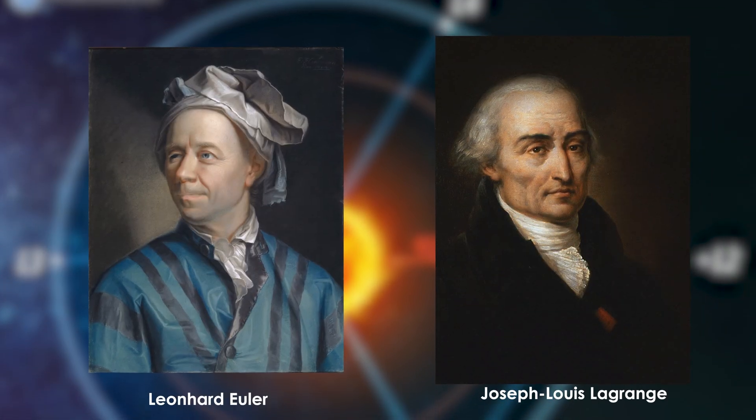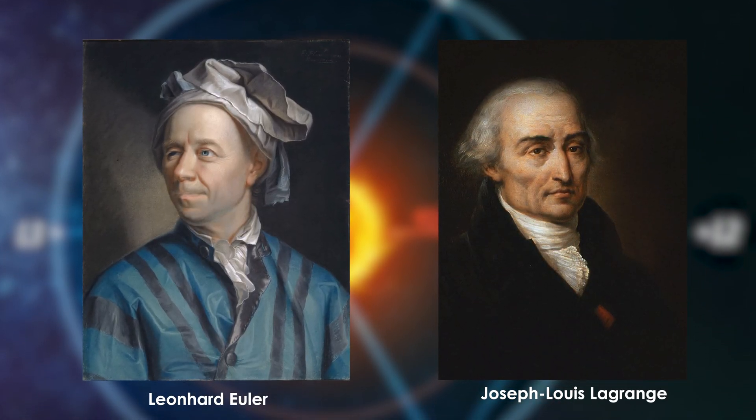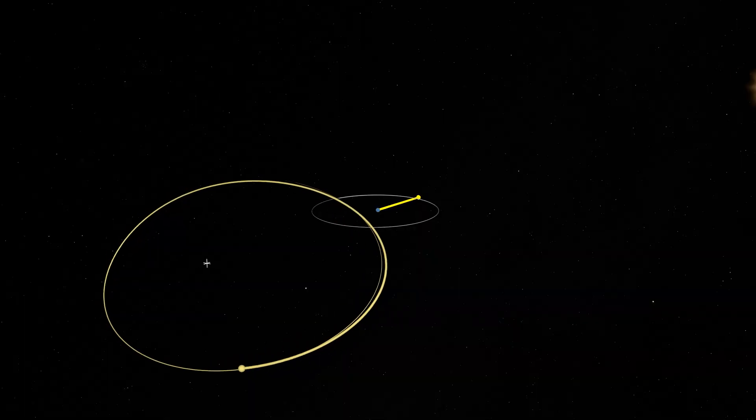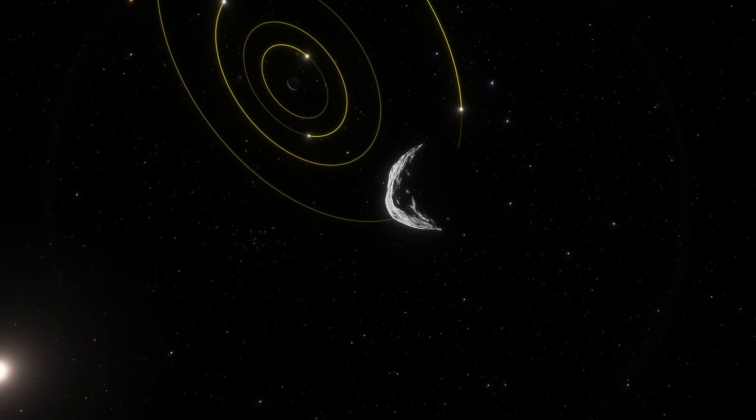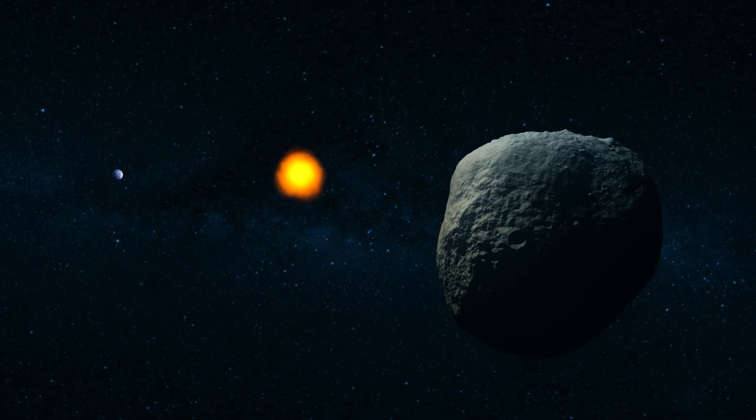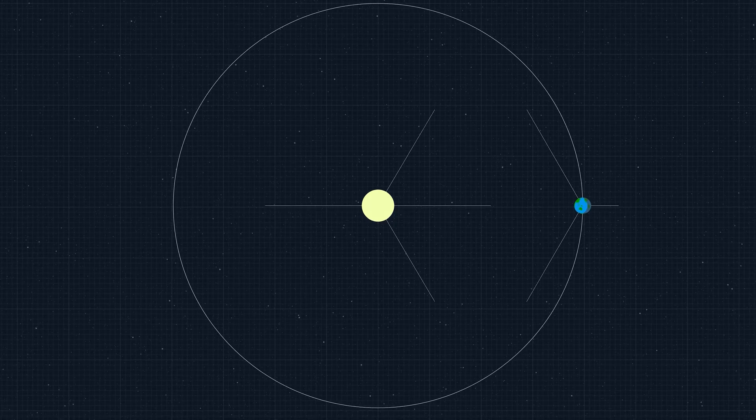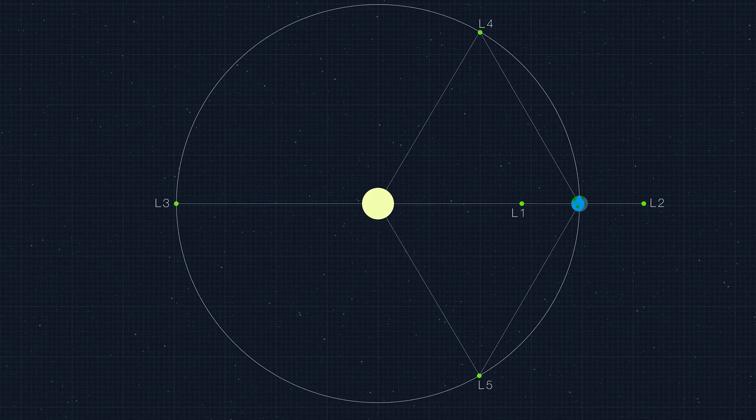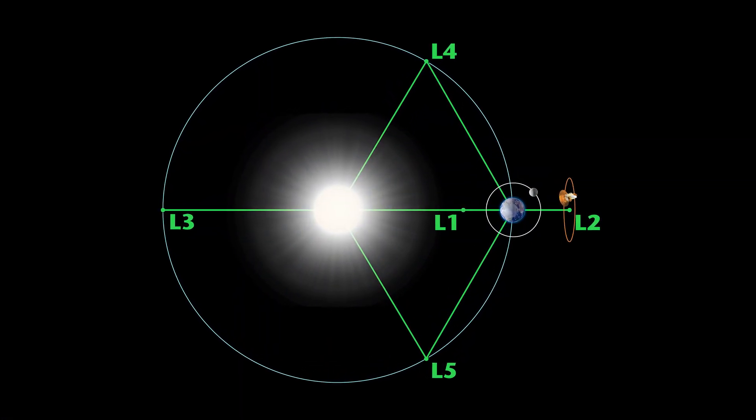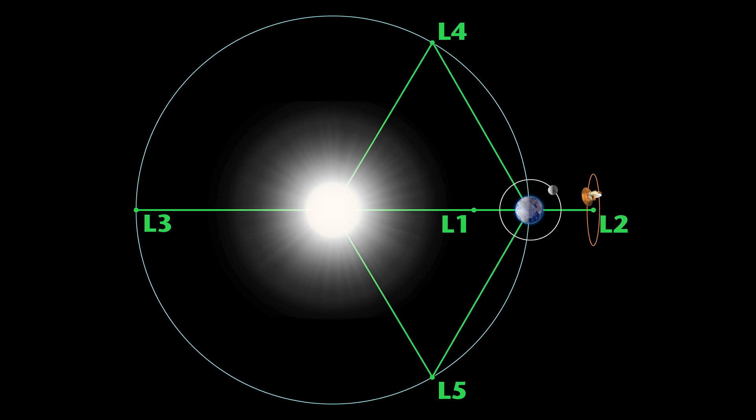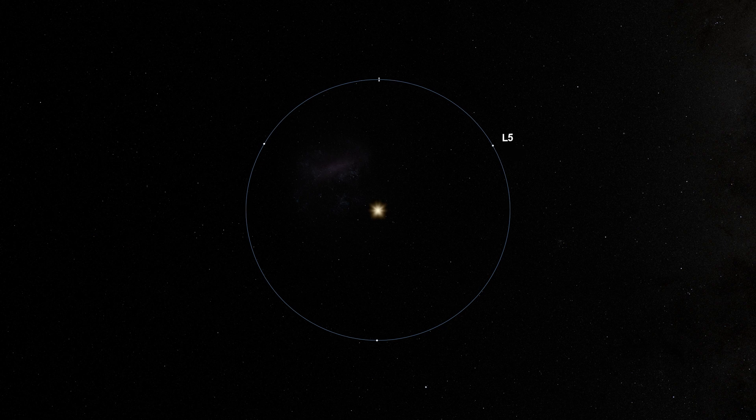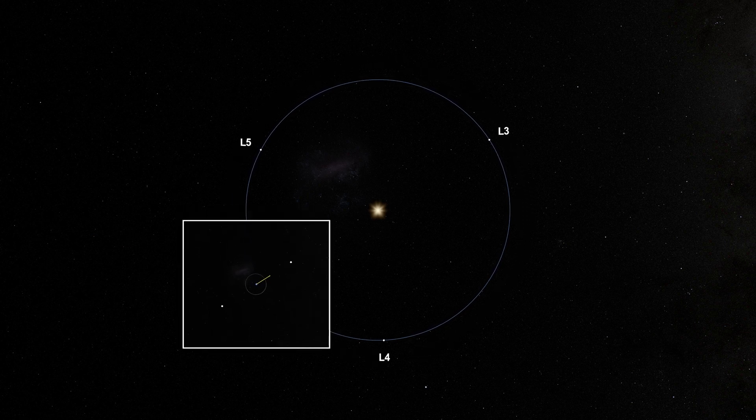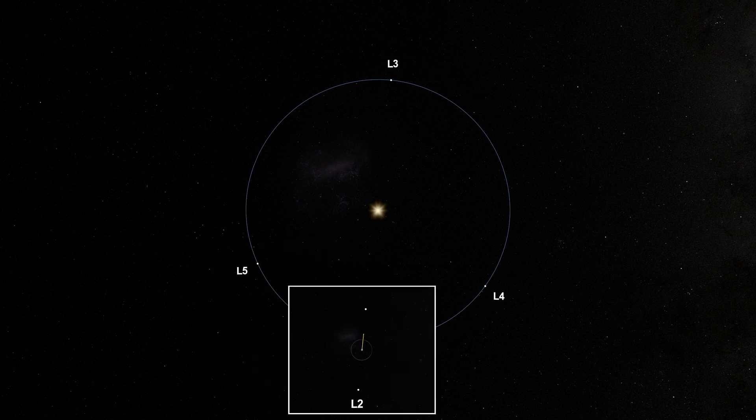Some of these were discovered by the famous German mathematicians Leonhard Euler and Joseph Louis Lagrange. Euler and Lagrange sought to simplify the task and assumed that one of the three objects had such a small mass compared to the other two that its gravity could be neglected. With these assumptions, they were able to identify five points of equilibrium. These points are now known as Lagrange points, although in fact the first three were found by Euler, and Lagrange expanded on his work by discovering two more.